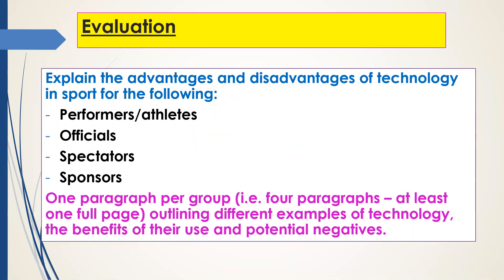This is the main task I want you to complete and send me evidence of. Can you please explain the advantages and disadvantages of technology in sport for each of the following: performers and athletes, officials, spectators, and sponsors. Write at least one paragraph per group — either typed or handwritten — amounting to at least one full page of work. Outline different examples of technology, the benefits of their use, and some of the potential negatives. I want specific examples for each group, how that technology is used, the intended benefits, and the potential downsides. Often that's to do with cost, but there are other things you can comment on.